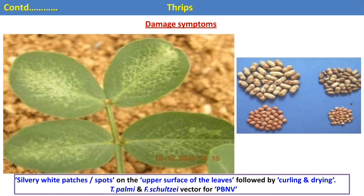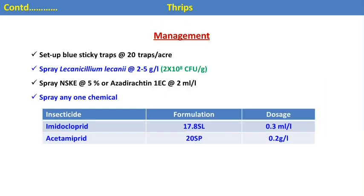Thrips also act as a vector for peanut bud necrosis virus. For management, use blue sticky traps to attract and monitor adults. Lecanicillium lecanii is an effective bioagent — an entomopathogenic fungus used against thrips and other sucking pests. Neem-based products — 5% NSKE and azadirachtin — are effective botanicals. Recommended insecticides are imidacloprid and acetamiprid, which are systemic insecticides used against all sucking pests.